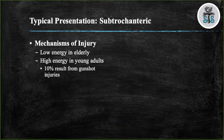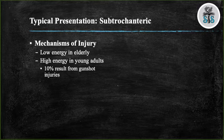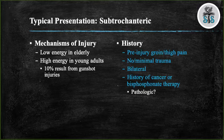The typical presentation for subtrochanteric hip fractures in the elderly population will usually be low energy injuries. In the younger population, they will usually be due to higher energy type of injuries. Ten percent of subtrochanteric hip fractures are due to gunshot injuries. When you obtain your history from your patient, you want to make sure that you ask if they had any groin or thigh pain leading up to their presentation, and ask about the mechanism of injury. If they say they simply were standing when their leg gave out, this should alert you to the possibility of this fracture being pathologic.